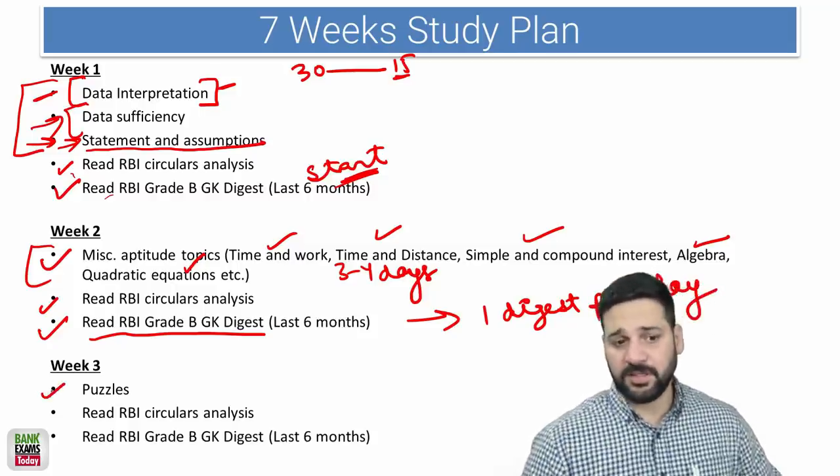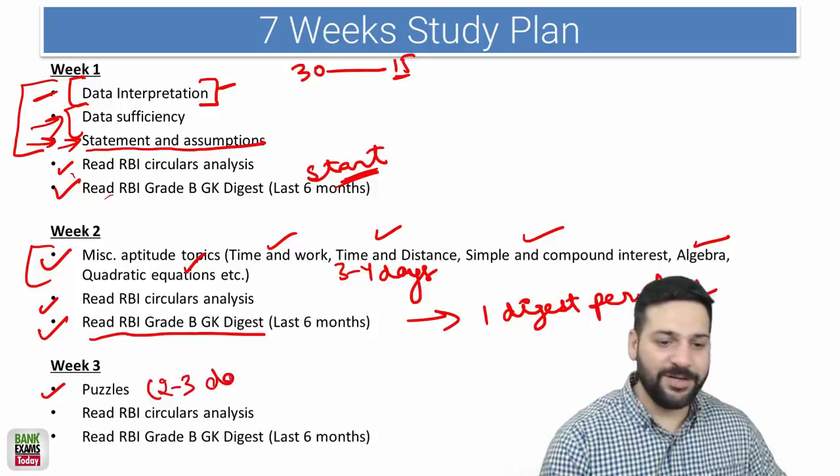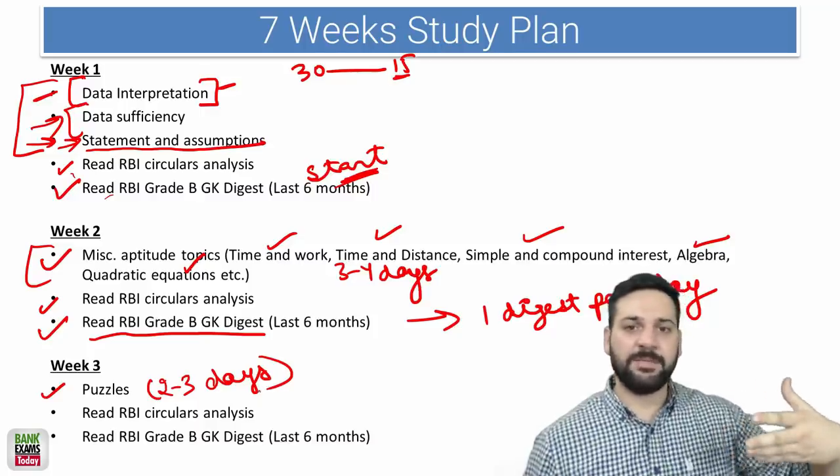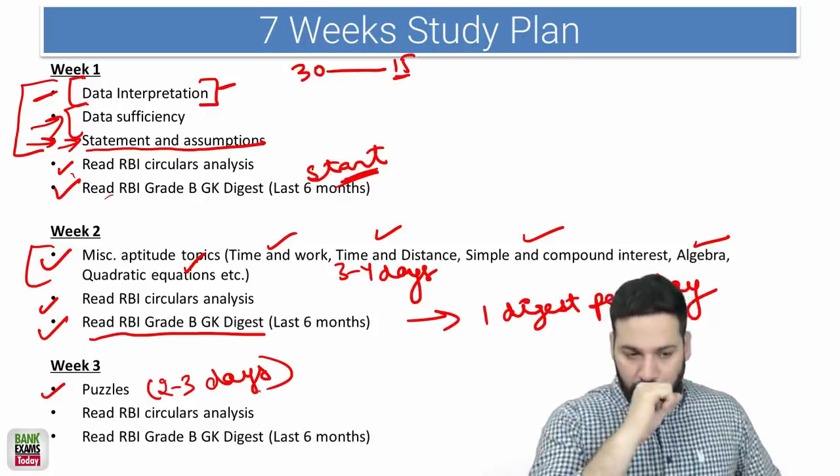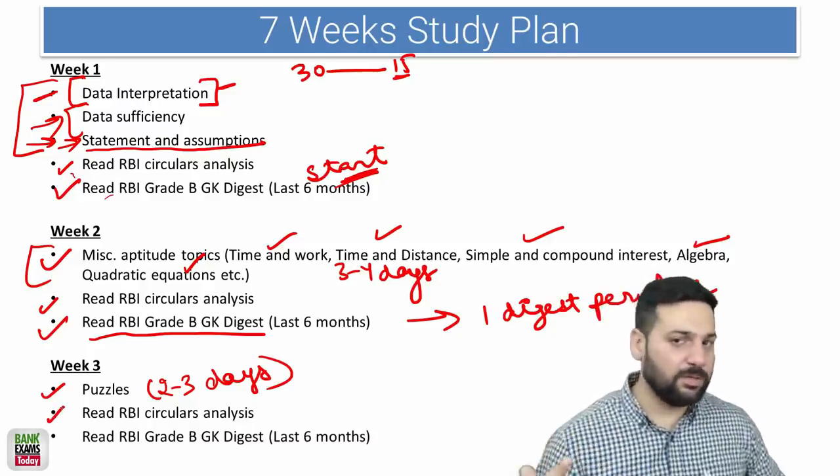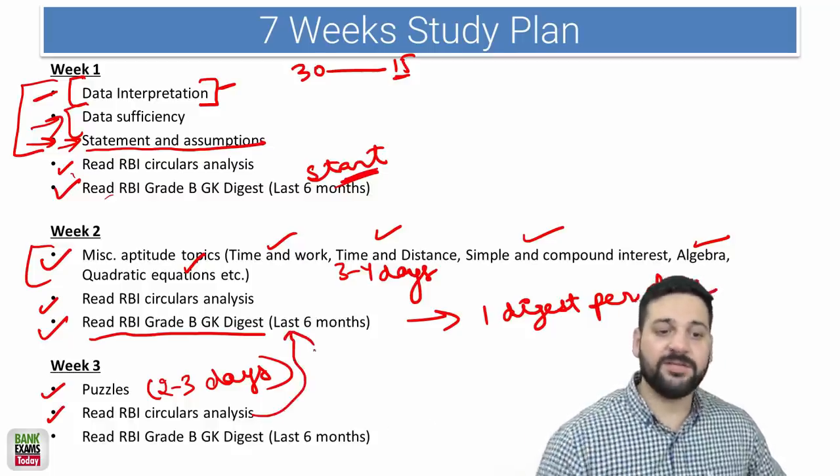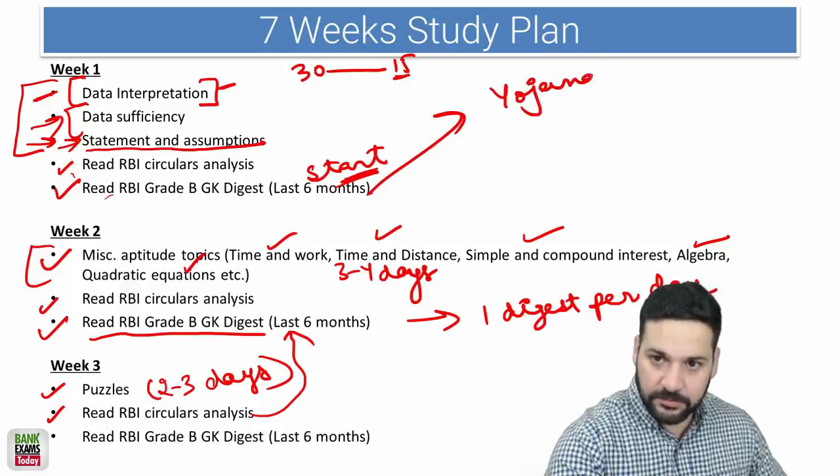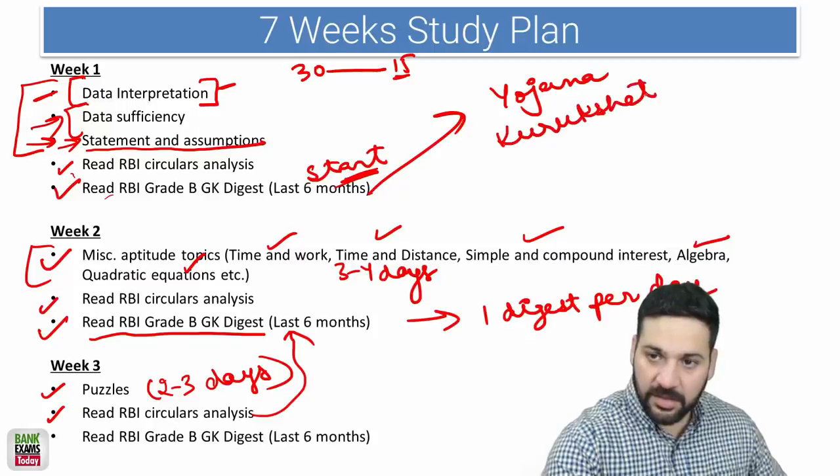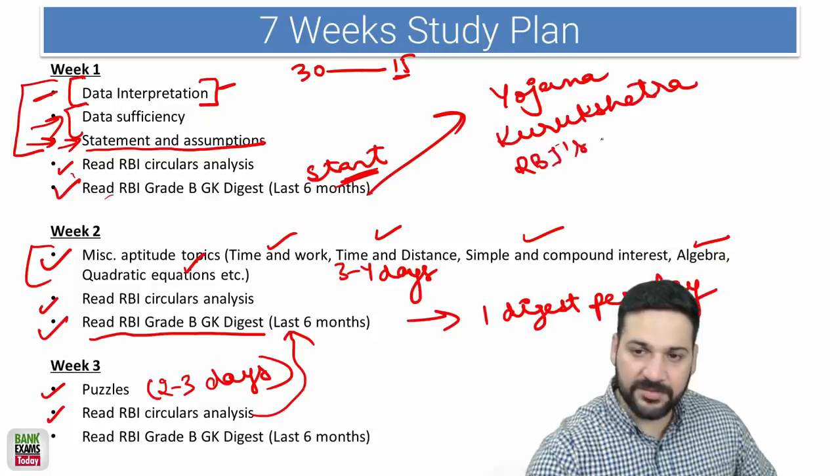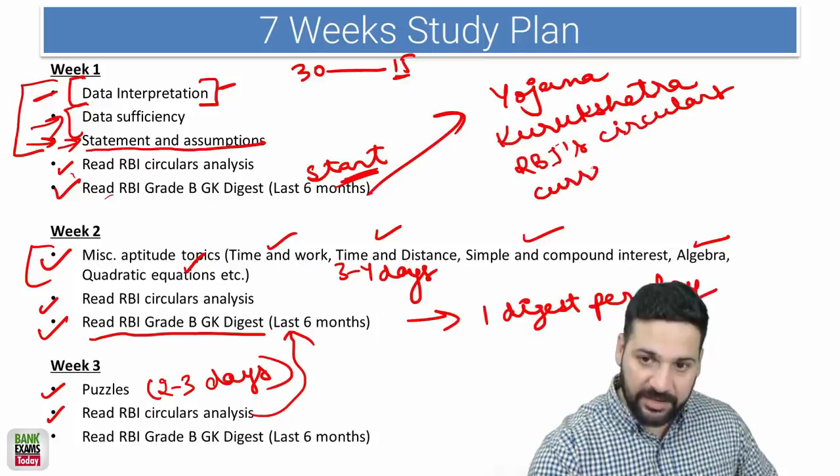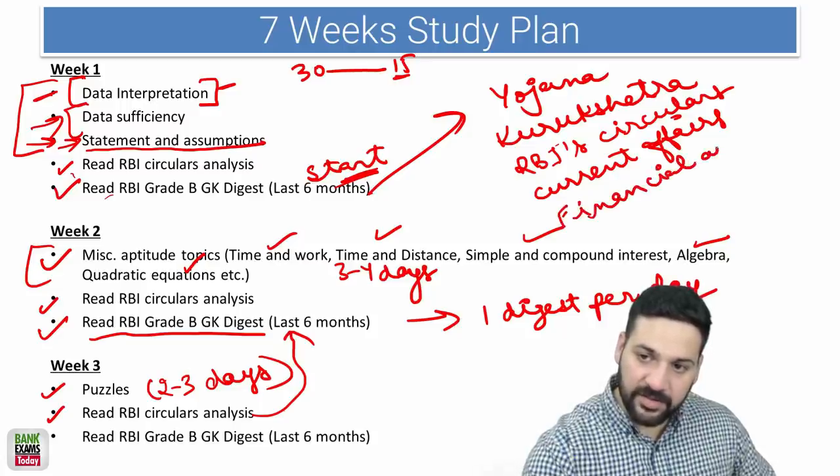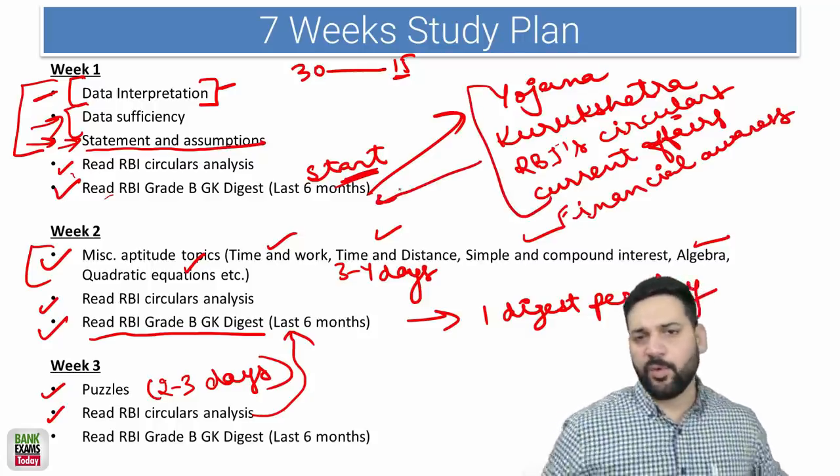Week 3, start with the puzzles. You can do that within 2-3 days. If it is the very first time you are doing the puzzle it will be a little difficult, but if you are doing it from a long period of time it would be very easy for you. Then RBI circulars, the master circulars. I have done the analysis of that. Good news is that RBI circulars are part of RBI Grade B GK digest. In the RBI Grade B GK digest we have done the analysis of Yojana magazine, Kurukshetra, RBI circulars, current affairs, and financial markets.